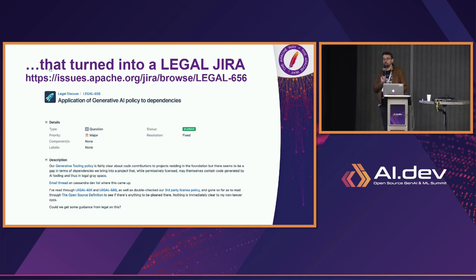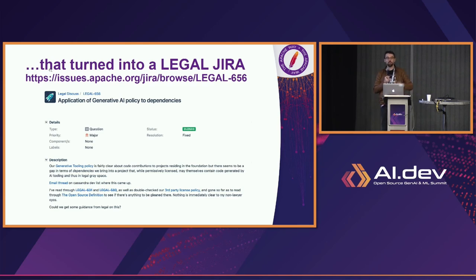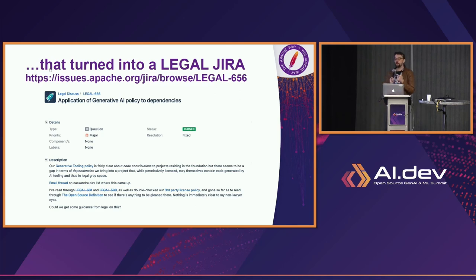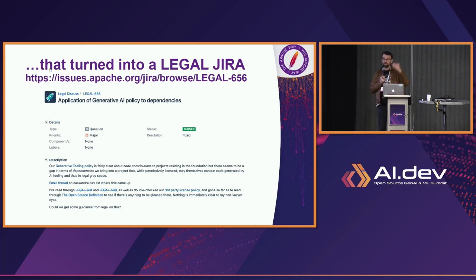But now the question is: whose code is it? Is it Jonathan's? Is it Gen AI's? He goes through all the various ways you would use one of those tools, but it's very unclear to the community what to do about it. Do we accept it? Do we not accept it? If you're interested in a real thoughtful discussion about how the community views these types of problems, I highly recommend Googling legal-656, or clicking on the link once the presentation is available, and reading through the discussion.